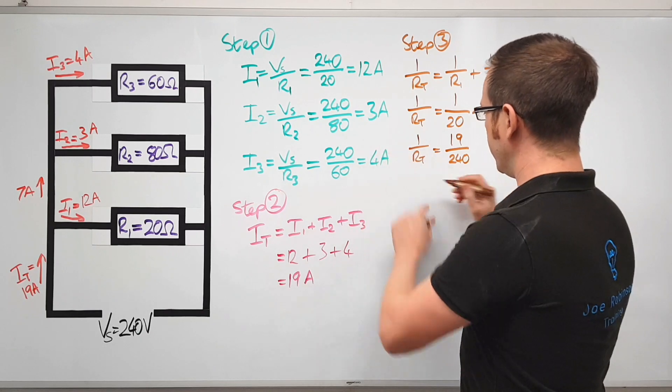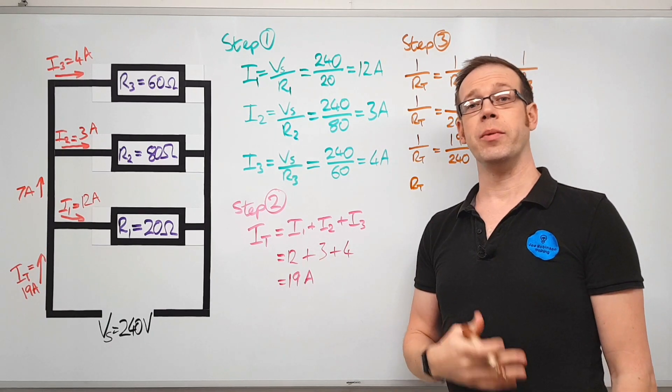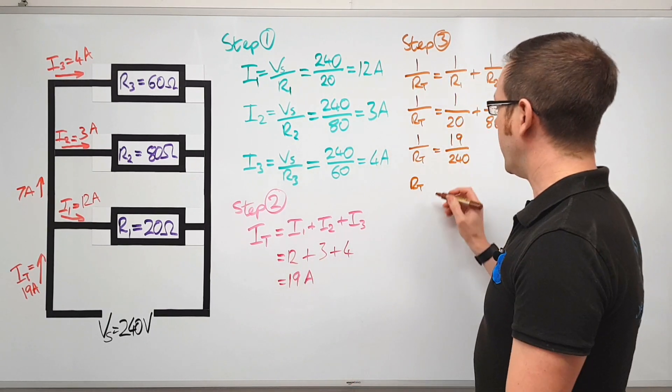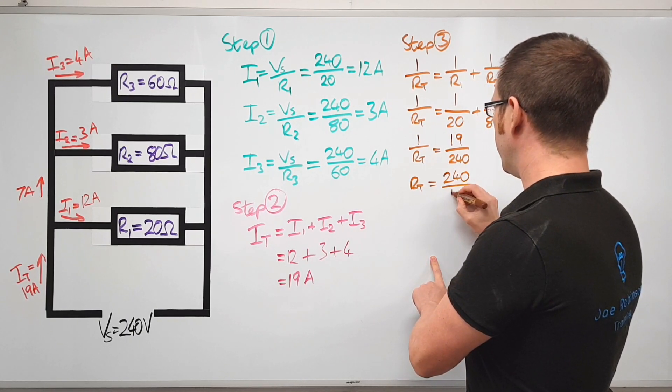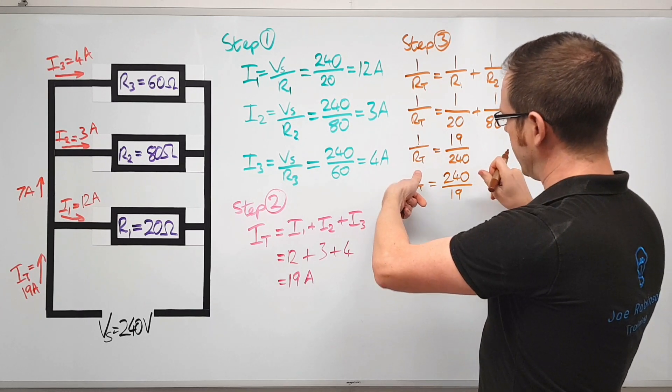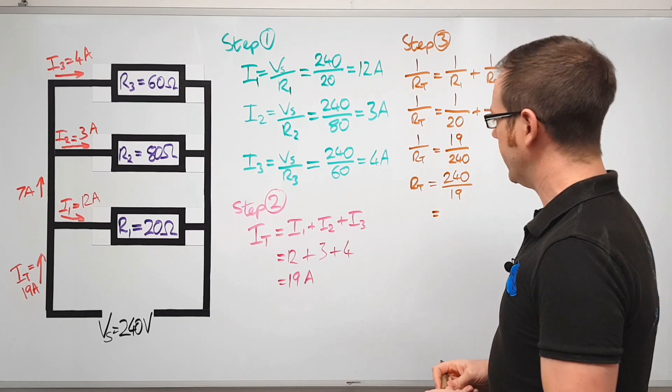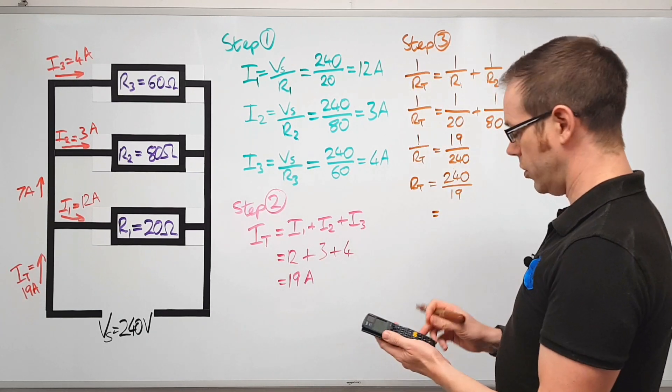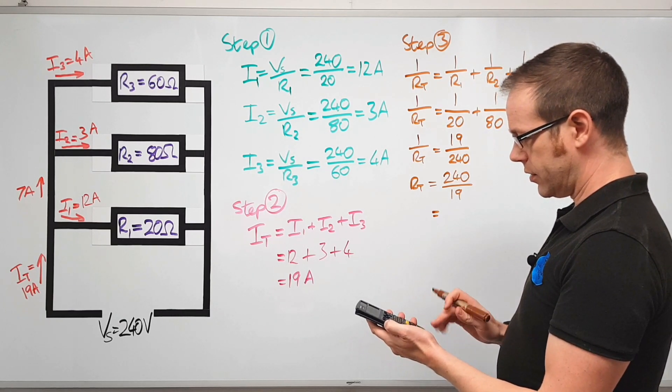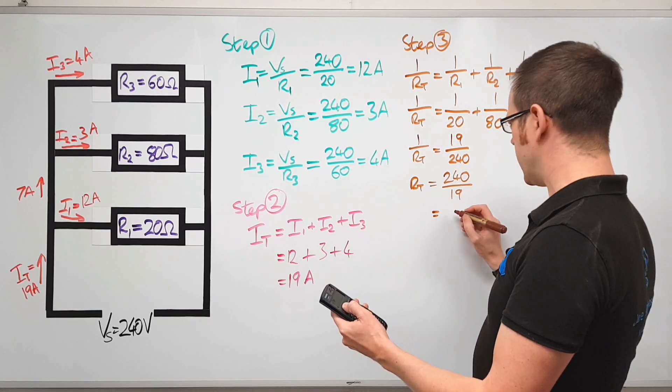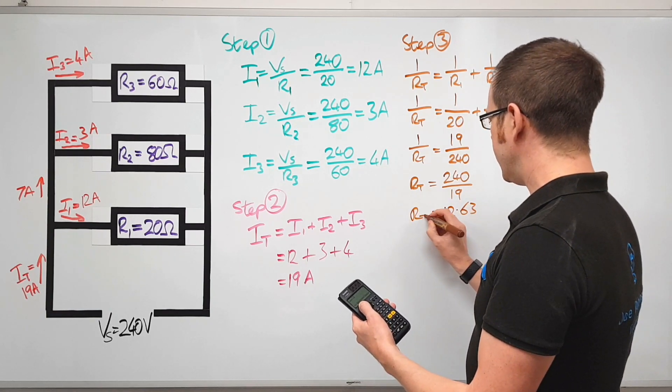So if we turn that side upside down it becomes RT, and we could put divided by one but of course if you divide any number by one it simply stays the same. So RT is equal to in this case 240 divided by 19. So we've just flipped both of those upside down. We've lost the divide by one because it makes no difference to the calculation, and then 240 divided by 19 is going to give us 12.63.